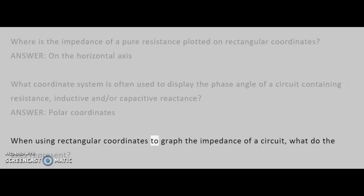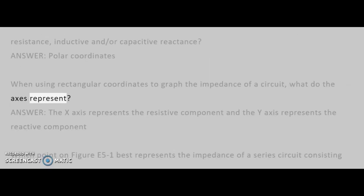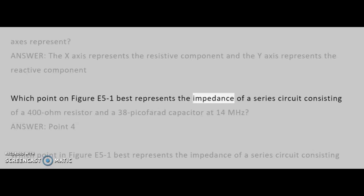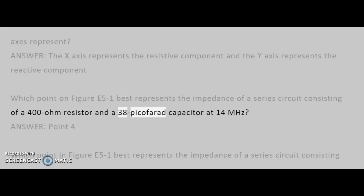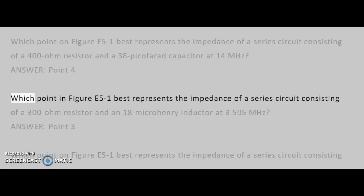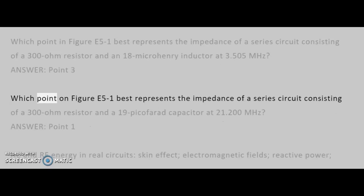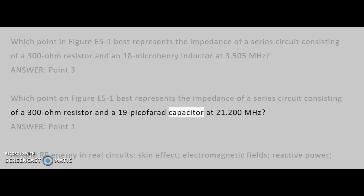When using rectangular coordinates to graph the impedance of a circuit, what do the axes represent? Answer: The x-axis represents the resistive component, and the y-axis represents the reactive component. Which point on figure E5-1 best represents the impedance of a series circuit consisting of a 400 ohm resistor and a 38 pF capacitor at 14 MHz? Answer: Point 4. Which point best represents a 300 ohm resistor and an 18 µH inductor at 3.505 MHz? Answer: Point 3. Which point best represents a 300 ohm resistor and a 19 pF capacitor at 21.200 MHz? Answer: Point 1.